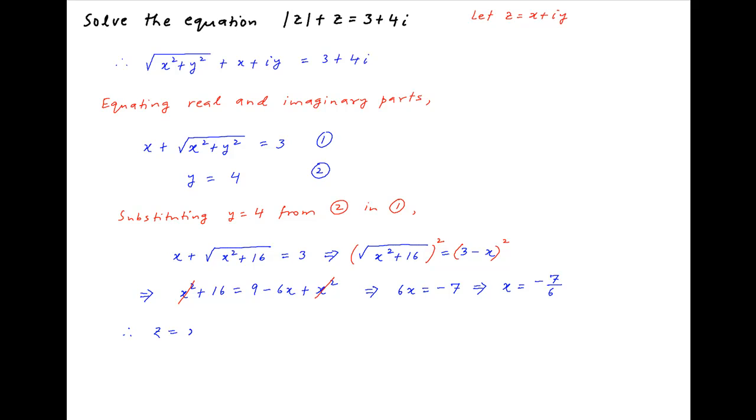Therefore, z, which is equal to x plus iy, is equal to minus 7 upon 6 plus 4i.